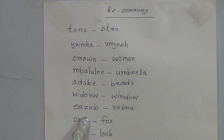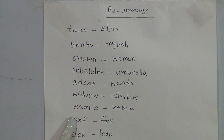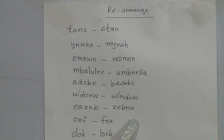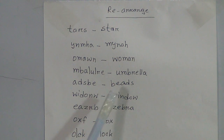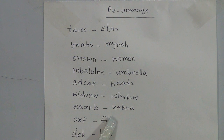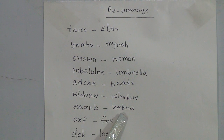Then the next jumbled letters: E, A, Z, R, B. If we arrange these jumbled letters properly, we will get a meaningful word: zebra. Zebra spelling is Z-E-B-R-A, zebra.